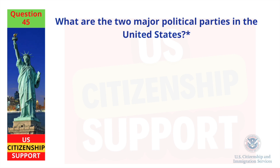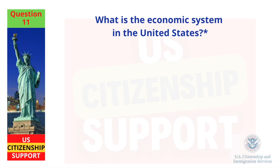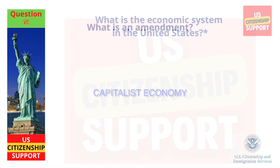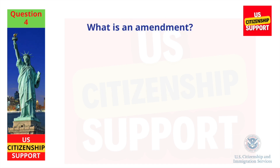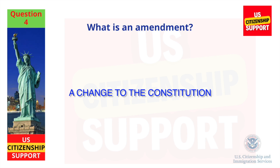What are the two major political parties in the United States? Democratic and Republican. What is the economic system in the United States? Capitalist economy. What is an amendment? A change to the Constitution.